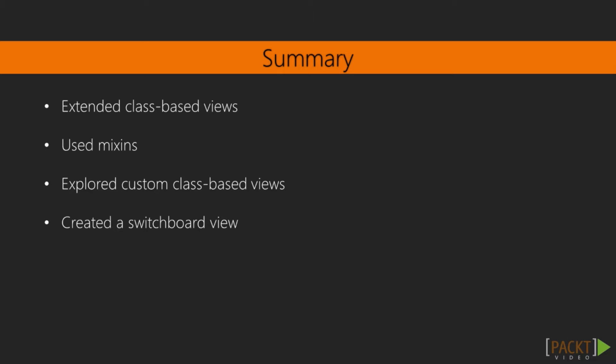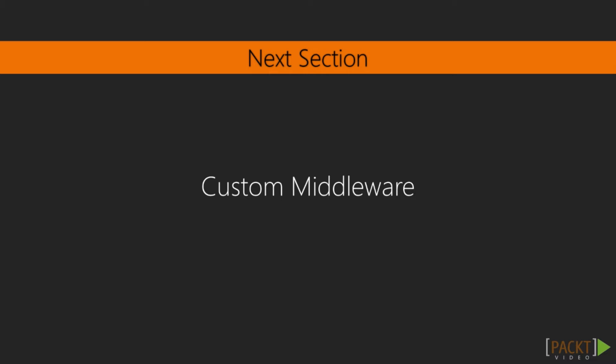In this section, we covered class-based views and how they're built using mixins. Then we created our own mixin. Then we created a new basic view and enhanced it with our own view logic. Finally, we used getattr to create a switchboard method and updated our urls.py file to pass in variables when calling our class. In the next section, we're going to tackle another advanced Django topic — custom middleware.